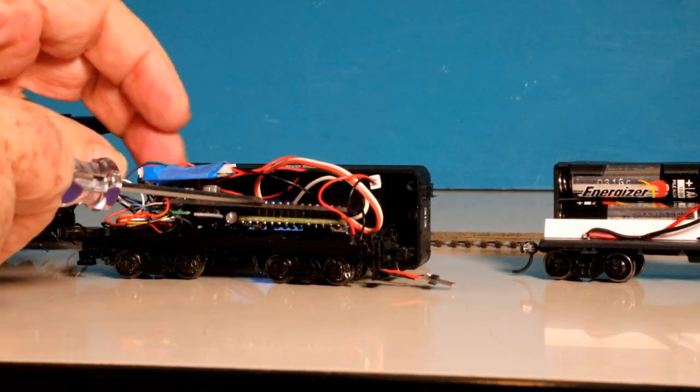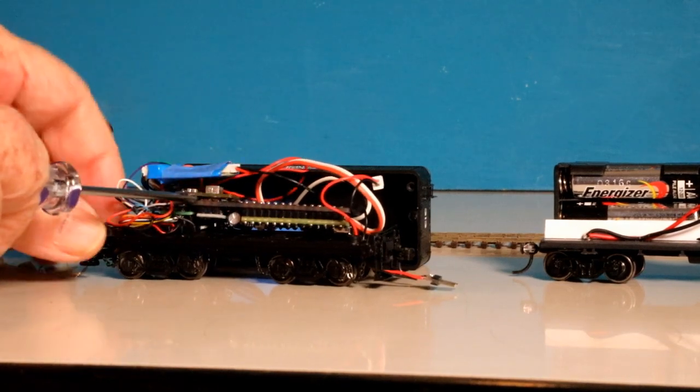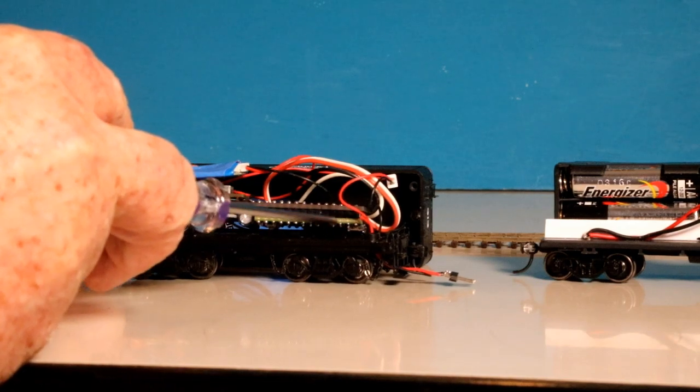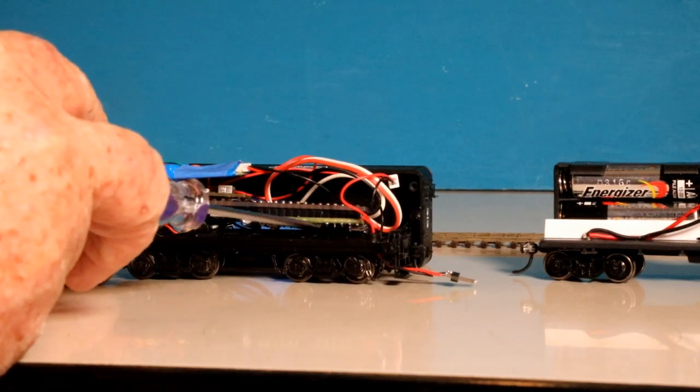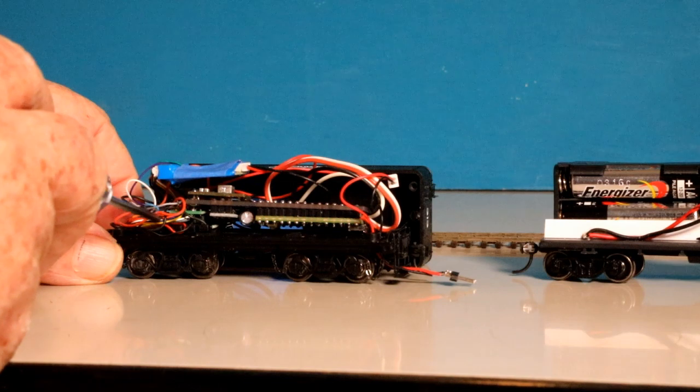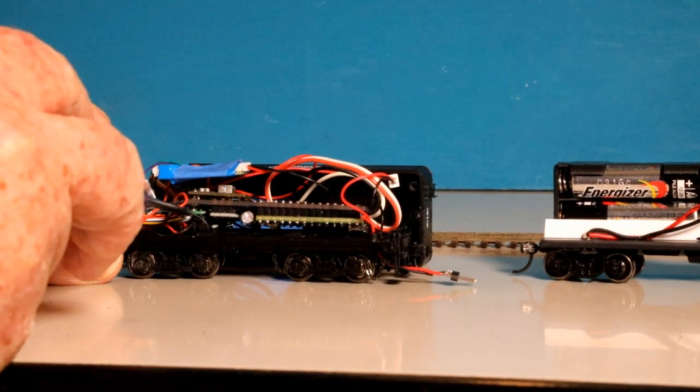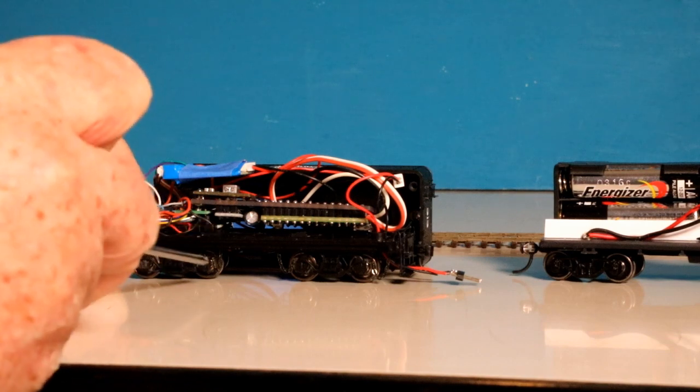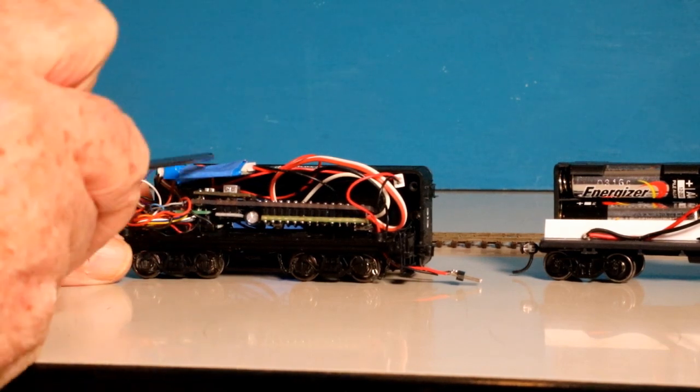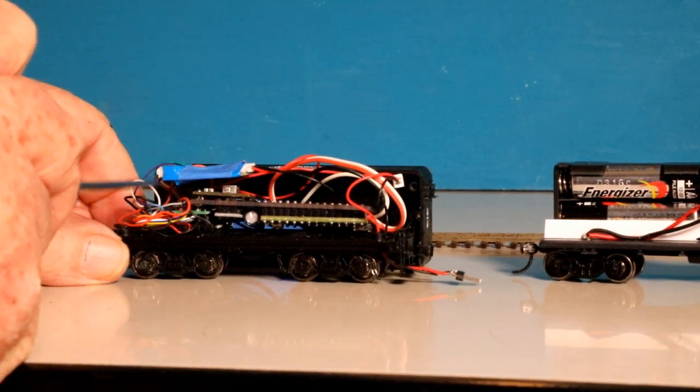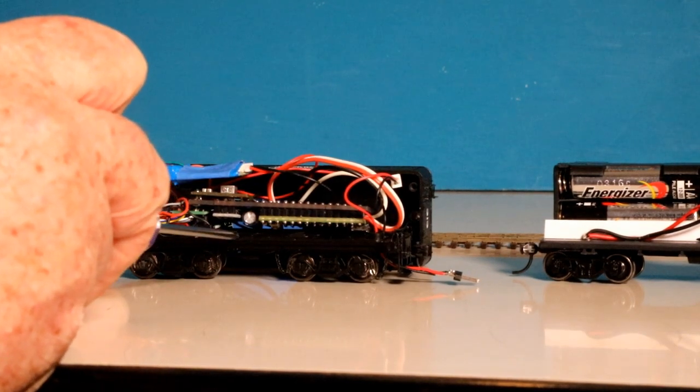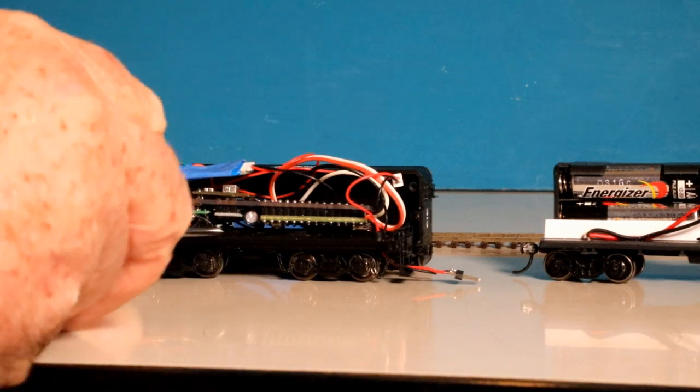And here's the SOCS module right here. This little board that has the Teensy LC that's connected with it. This is just the 8-pin plug adapter that the original tender had. There's no other modifications to it. Take the Digitrax decoder, plug it into the adapter. I did remove the weight that was in the tender to give me a little bit more room.